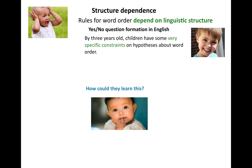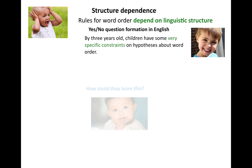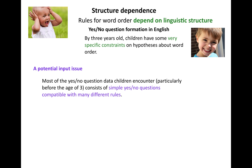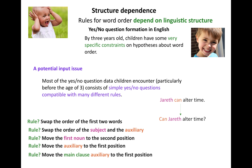They're not perfect, but they definitely are not considering everything out there, including some very basic and seemingly simpler hypotheses that are not structure dependent. So how could they learn this? There's a potential input issue with respect to yes-no questions, because most of the yes-no question data that children encounter, particularly before the age of three, consists of very simple yes-no questions, which are compatible with a lot of different rules — which we've talked about before. These are different rules that explain how you can get from a declarative to a yes-no question.